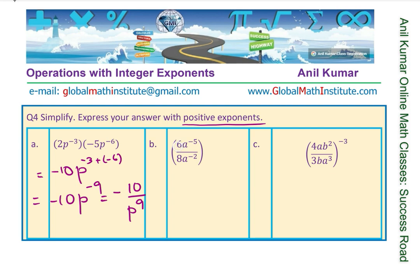The next one: 6 a to the power of minus 5 over 8 a to the power of minus 2. The 8 and 6 can be simplified — dividing by 2 we get 3 over 4. Remember, a is to the power of minus 5, not 6. Since the other one is in the denominator, we do minus of that exponent. So we get 3 over 4 times a to the power of minus 5 plus 2, which is minus 3, or written as 3 over 4a cubed.